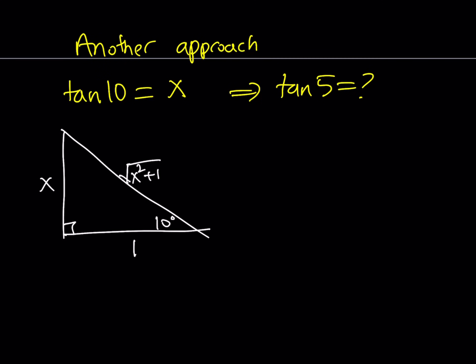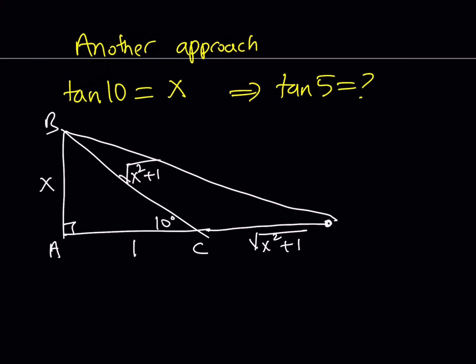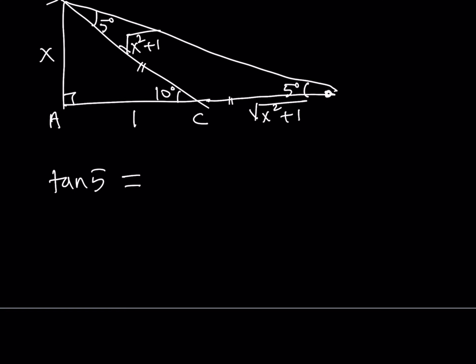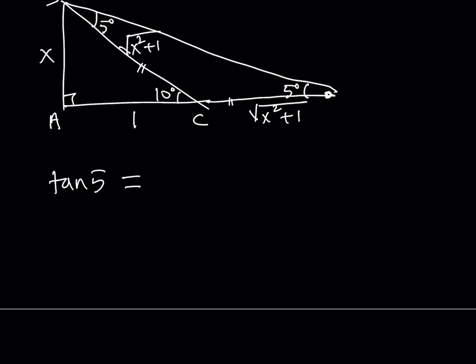Here's the awesome trick — I really love this because it allows you to cut an angle in half. Extend the base AC by the length of BC, which is the square root of x squared plus 1. You get an isosceles triangle where these two sides are congruent. That means the base angles are congruent. By the exterior angle theorem, alpha plus alpha equals 10 degrees, so alpha equals 5. This angle is 5 degrees and this one is 5 degrees. So tangent 5 can be found from here: it equals opposite over adjacent, which is x divided by the square root of x squared plus 1, plus 1.